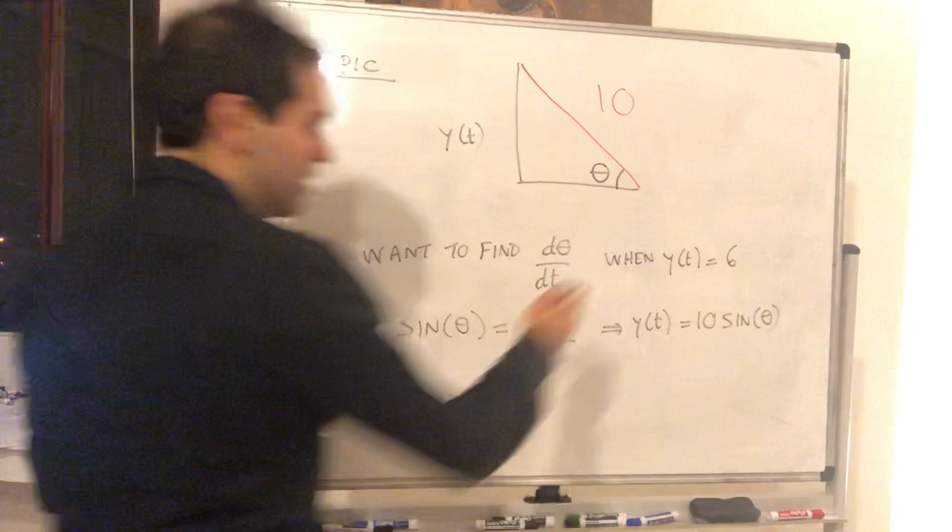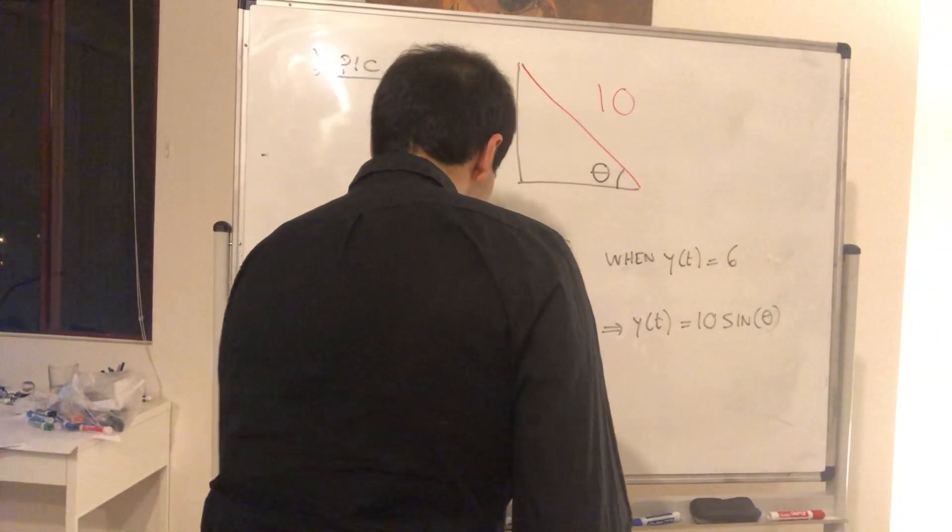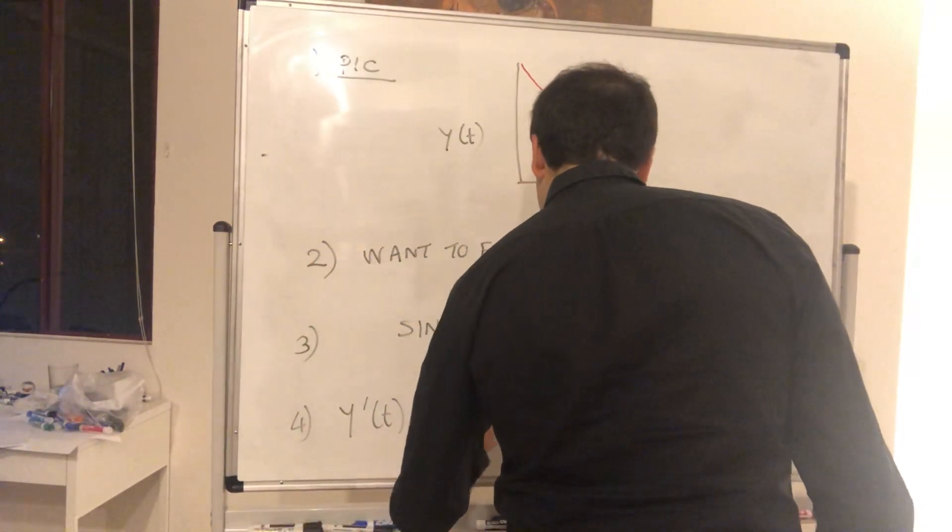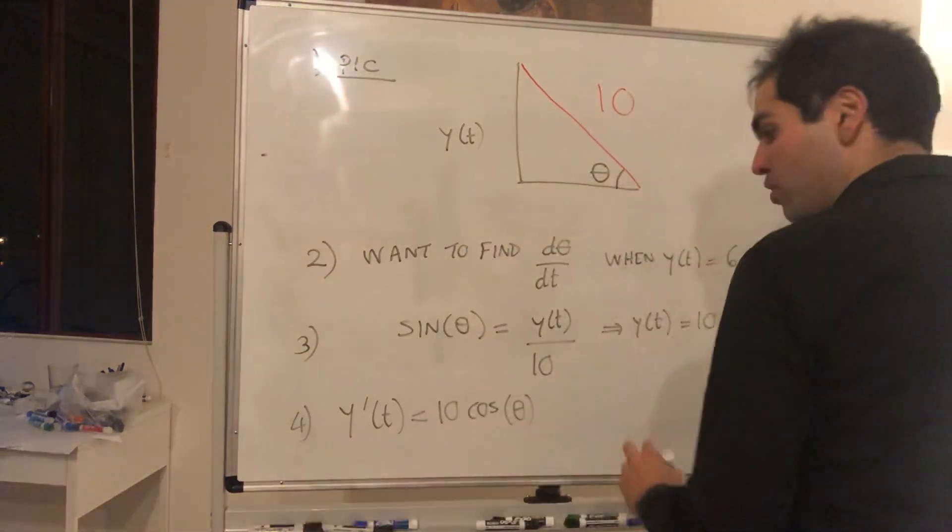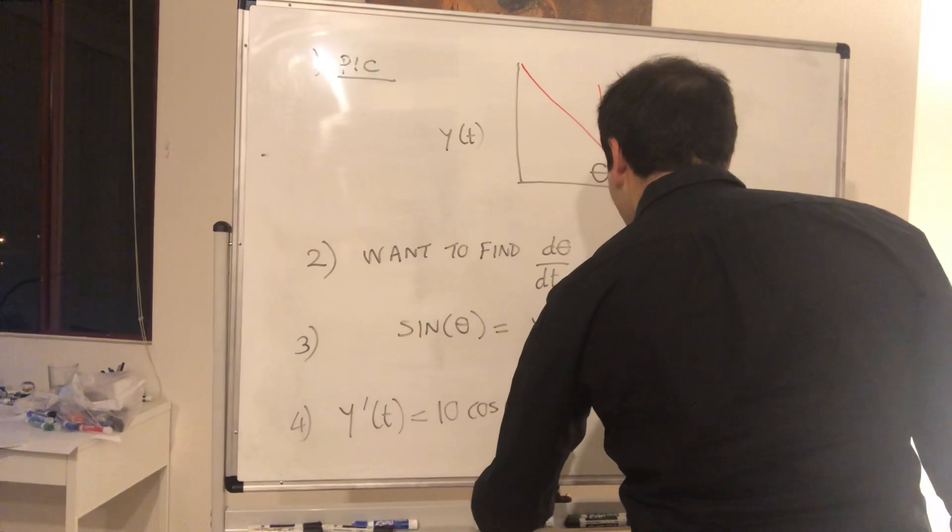And now what we would like to do, let's differentiate that. So what we get is y prime of t equals 10 cosine theta. But remember we also need to differentiate theta. So it's times d theta over dt.